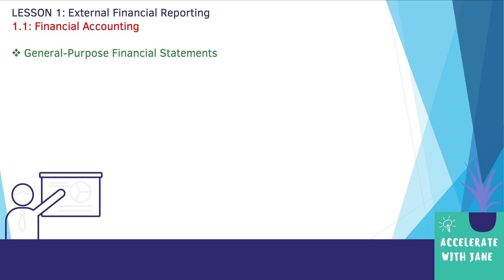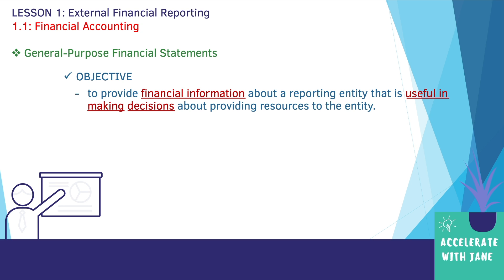So what is the objective of the general purpose financial statements? Basically the objective is to provide financial information about a reporting entity that is useful in making decisions about providing resources to the entity. In other words, general purpose financial statements are relevant since they provide financial information necessary to users such as investors, creditors, and so on, so that these users can make informed decisions about the entity.